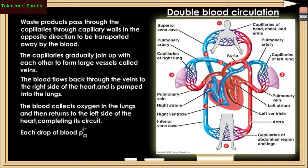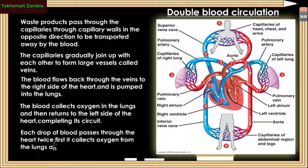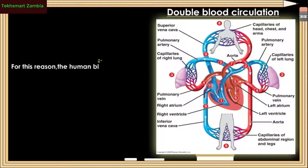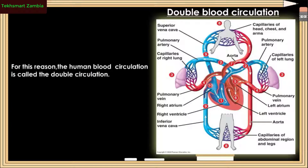Each drop of blood passes through the heart twice: first it collects oxygen from the lungs, and then delivers it to the rest of the body. For this reason, the human blood circulation is called the double circulation.